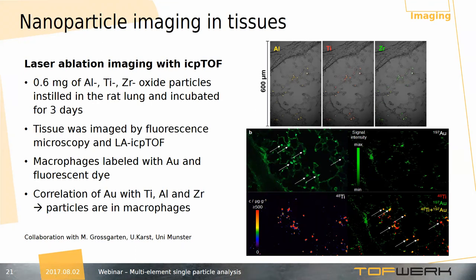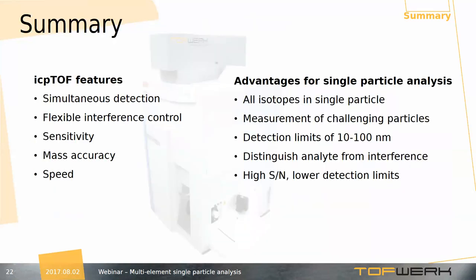This was the last application I wanted to show you. To summarize, the important features of our instrument for single particle analysis include: simultaneous detection, which gives information about all isotopes even in single particles, opening a completely different world for single particle ICP-MS applications; flexible interference control, giving flexibility in dealing with different interferences and measuring challenging particles; sensitivity sufficient to measure particles in the size range from 10 to 100 nanometers; mass accuracy to qualitatively distinguish analyte peaks from interfering peaks; and speed, which increases signal-to-noise ratio and improves the detection limit.